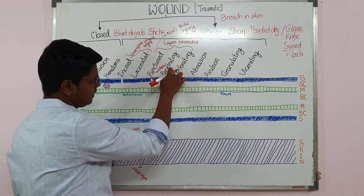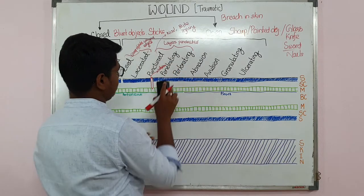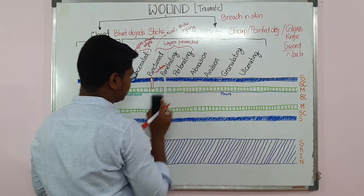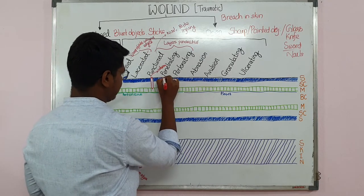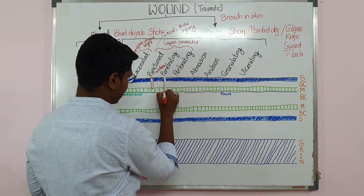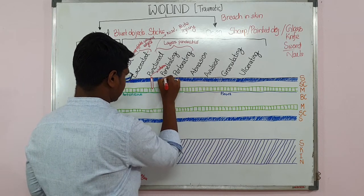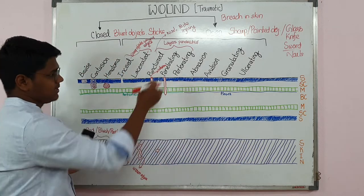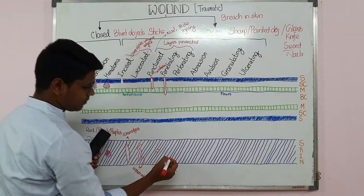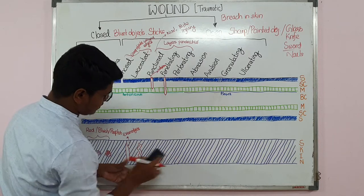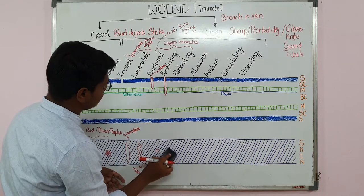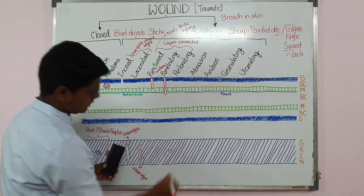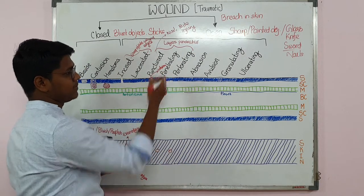Next is the penetrating wound. It is the same as a punctured wound, but the key difference is that it communicates with the body cavity — whether the abdomen or the thorax. From the above surface it will look the same as a punctured wound.